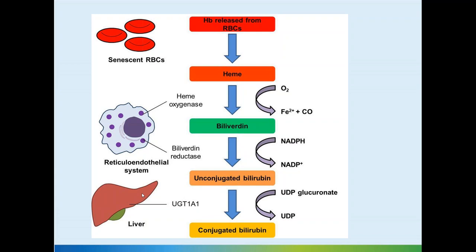Babies born vaginally may have bruising, and some may have cephalohematoma — a blood collection in the scalp coverings — leading to more red cell destruction and bilirubin production. In the first three to four days, the baby is relatively dehydrated because breast milk production is on the lower side. Dehydration increases the risk of jaundice because the conjugation process needs energy, and hemoconcentration relatively increases unconjugated bilirubin in the blood.